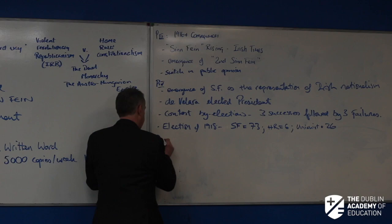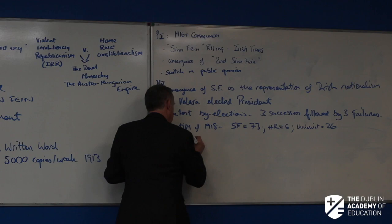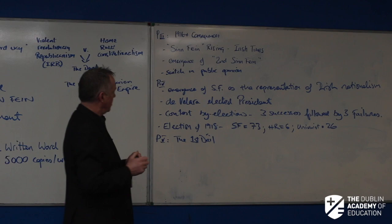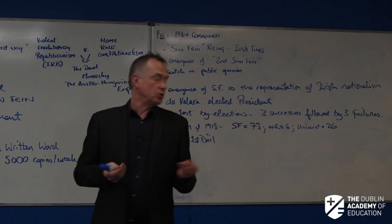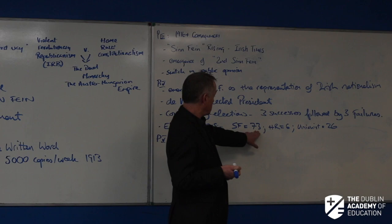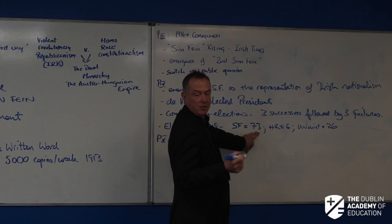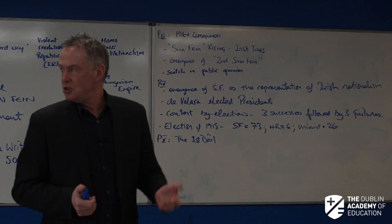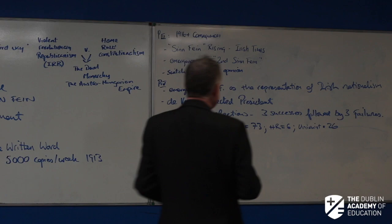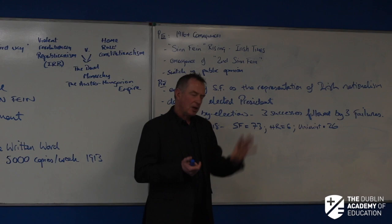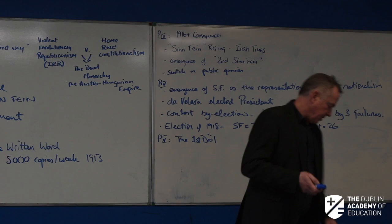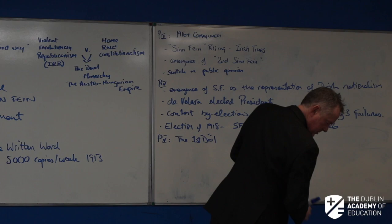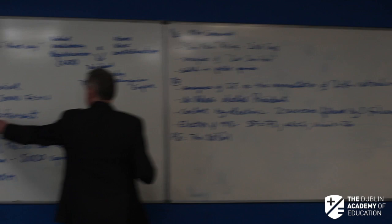Paragraph five: The first Dáil met in the Mansion House on 21st January 1919. All 73 Sinn Féin MPs abstained from Westminster; 38 of them were in jail due to the German plot, so 35 met and proclaimed the Dáil as the government of 32-county Ireland — carrying out Griffith's policy of abstention. Of course you can make that claim for areas where Sinn Féin won, but that raises the question of partition.